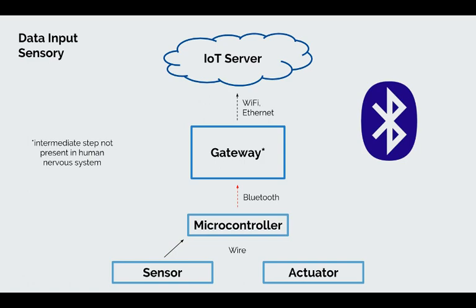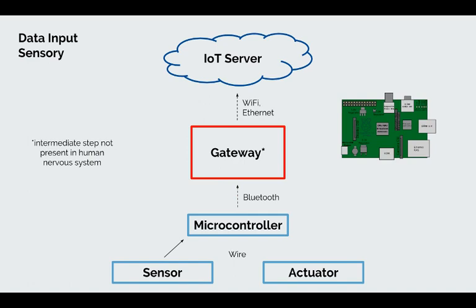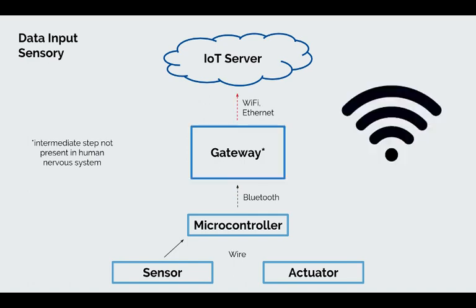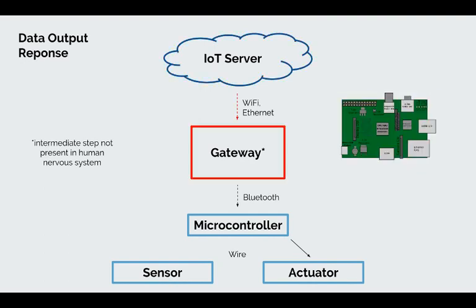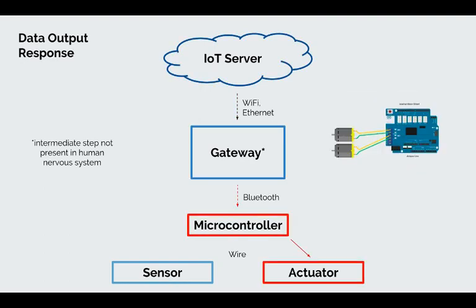This communication can either take place using a wire or a form of simple wireless communication, such as Bluetooth, to relay this information to a gateway — the intermediate step. The gateway then has the ability to use a more powerful means, such as Wi-Fi or Ethernet, to send the information to the IoT server. The data is then processed, much like the human brain. An appropriate response will then be sent back to a gateway, which will relay the signal to the appropriate microcontroller and actuator. The actuator could be a motor or other object capable of responding to the signal, just as our brain tells our muscles to pick the flower.